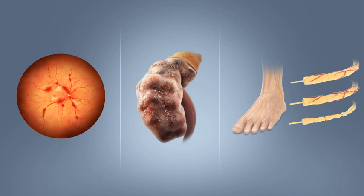People with diabetes can benefit from education about the disease and treatment, good nutrition to achieve a normal body weight, and exercise, with the goal of keeping both short-term and long-term blood glucose levels within acceptable bounds. In addition, given the associated higher risks of cardiovascular disease, lifestyle modifications are recommended to control blood pressure. No single dietary pattern is best for all people with diabetes. For overweight people with type 2 diabetes, any diet that achieves weight loss is effective.